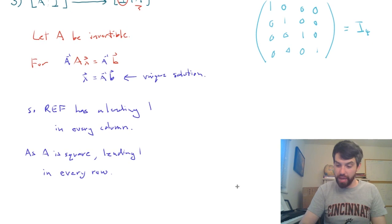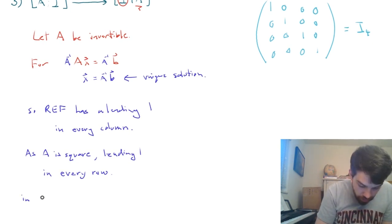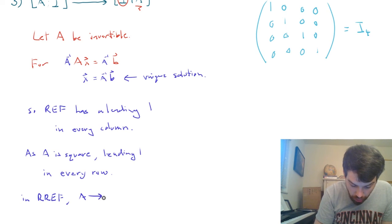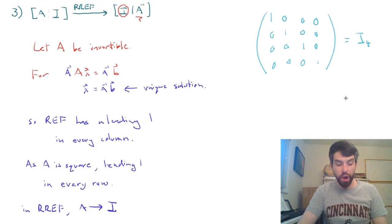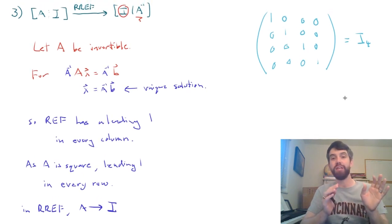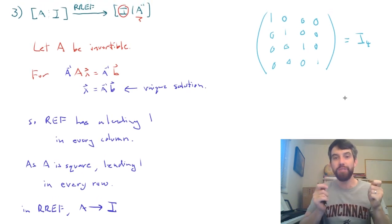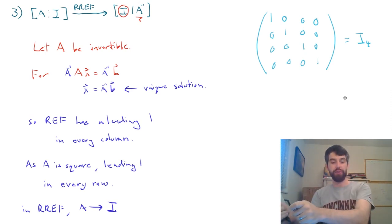So I think what we have concluded out of this is that in reduced row echelon form, the A is just going to go to the identity matrix. And that's what we had set out to demonstrate. We wanted to know that if the A is going to be invertible, it must be the case that it goes to the identity matrix.